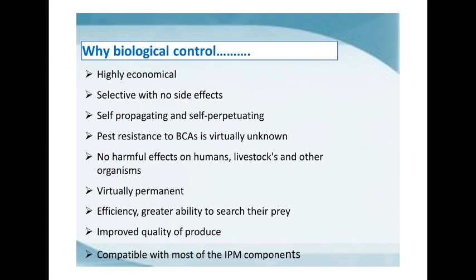Biological control is self-propagating and self-perpetuating. Resistance to biological control agents (BCAs) is virtually unknown. There is no harmful effect on humans, livestock, and other organisms. It is virtually permanent, with greater efficiency in searching prey. It improves quality of produce and is compatible with most other IPM components or methods.